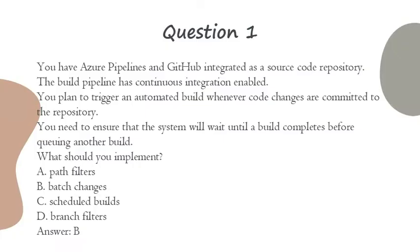Question 1. You have Azure Pipelines and GitHub integrated as a source code repository. The build pipeline has continuous integration enabled. You plan to trigger an automated build whenever code changes are committed to the repository. You need to ensure that the system will wait until a build completes before queuing another build. What should you implement?